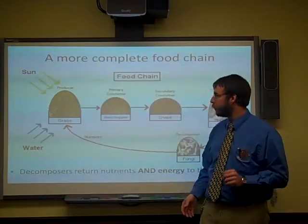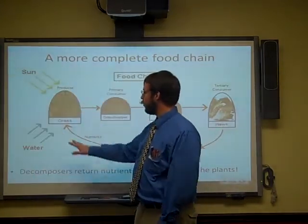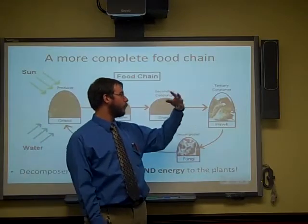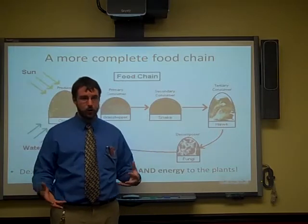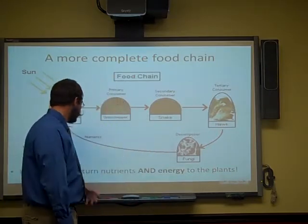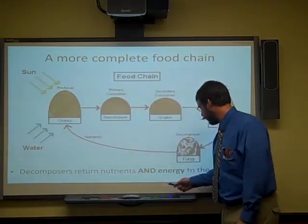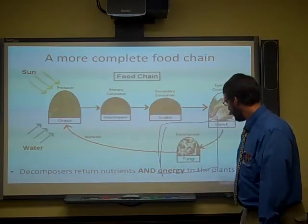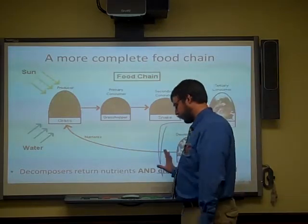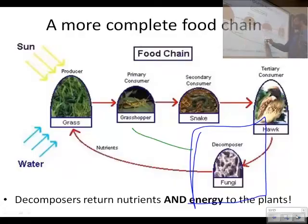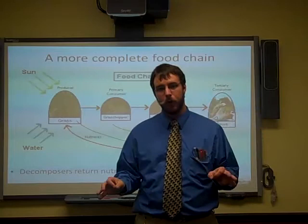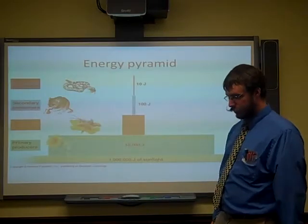In a food chain, the sun provides energy to the producer, the producer's energy goes to the primary consumer, then to the secondary consumer, and on to the tertiary consumer. But it's not just about energy — it's also about nutrients. Decomposers like fungi and bacteria cycle nutrients back to the producers. Really, arrows should come off every organism, because anything that dies — including grass — is consumed by decomposers. You cannot have an appropriate food web without decomposers.